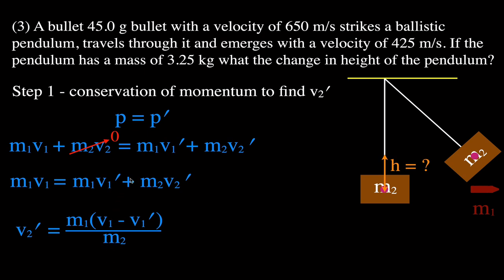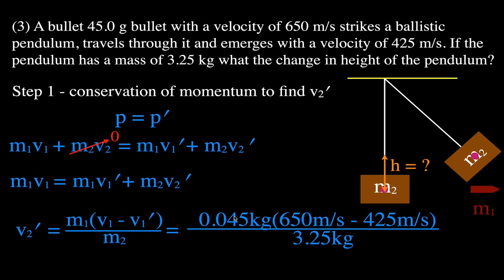Plugging in values: mass of bullet 0.045 kg, initial bullet velocity 650 m/s, final bullet velocity 425 m/s, divided by the pendulum mass of 3.25 kg. We get that the velocity of the pendulum right after the bullet passes through it — but before it starts to move up — is 3.12 meters per second.